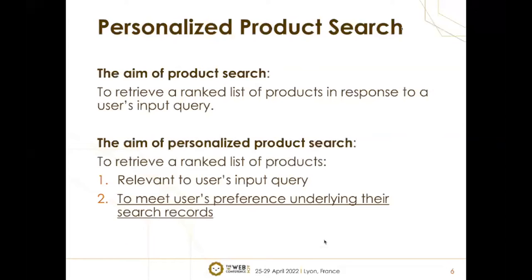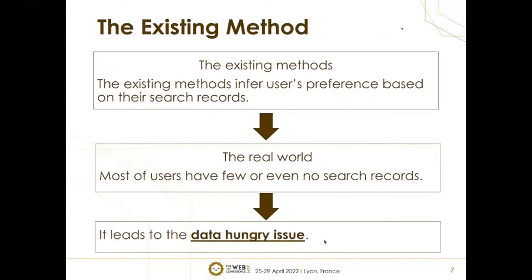More and more work studies the problem of personalized product search. Different from standard product search, personalized product search aims to retrieve a ranked list of products that is not only relevant to the user's input query, but also meets the user's preferences underlying their search records. To provide personalized search service, the important thing is to infer users' preferences from their search records. But it's challenging because most users have few or even no search records in the real world, leading to the data-hungry issue. The data-hungry issue means the model can achieve excellent performance when data is abundant, but if data is scarce, the model has degraded performance or even cannot work.